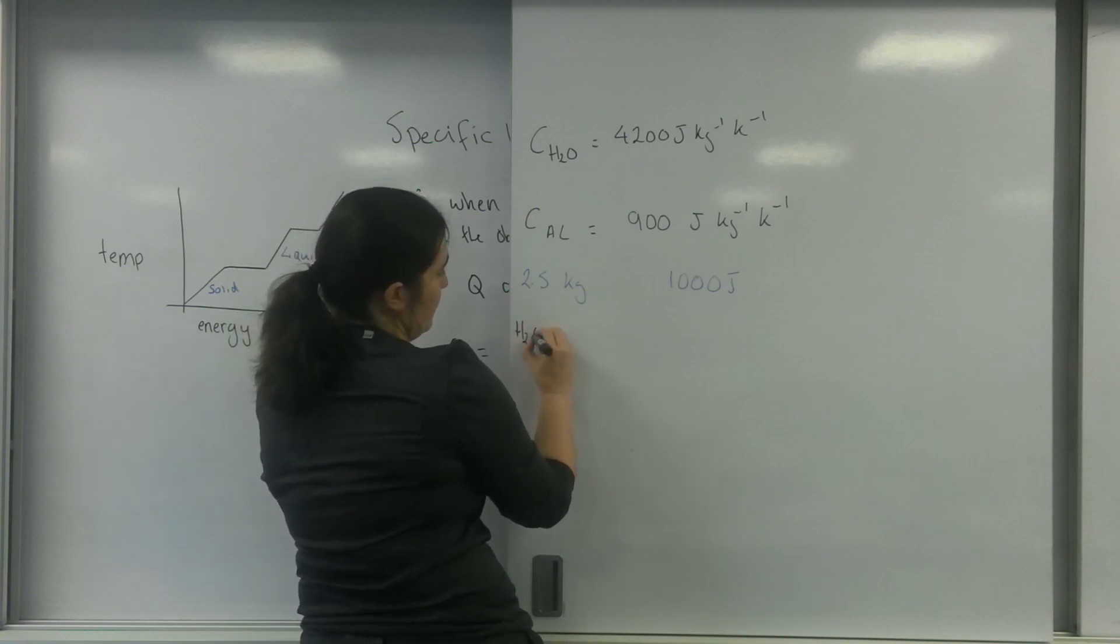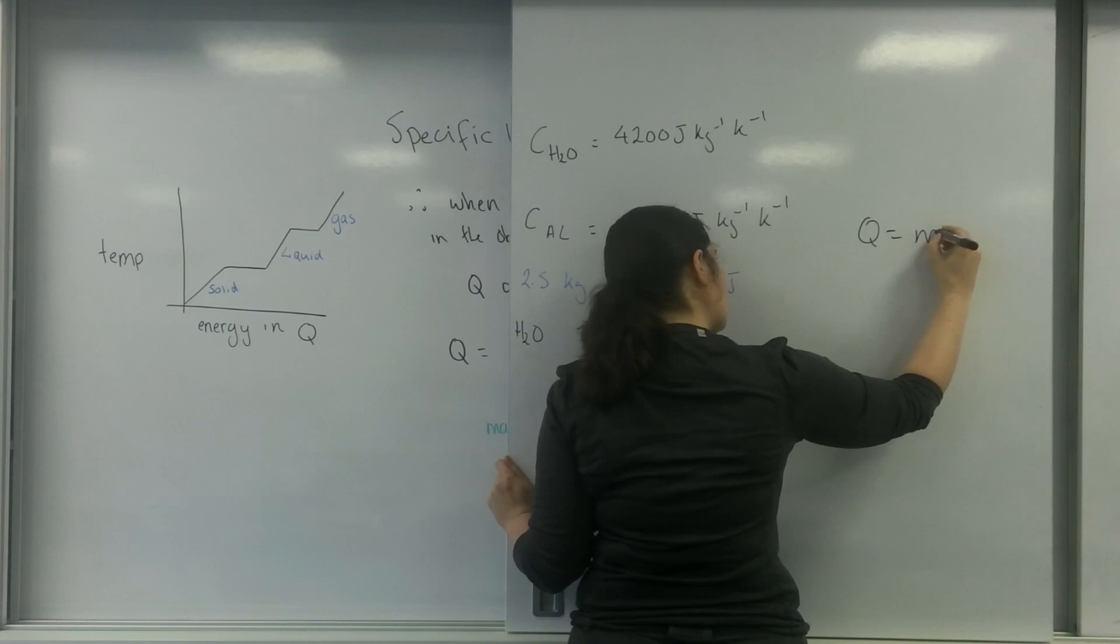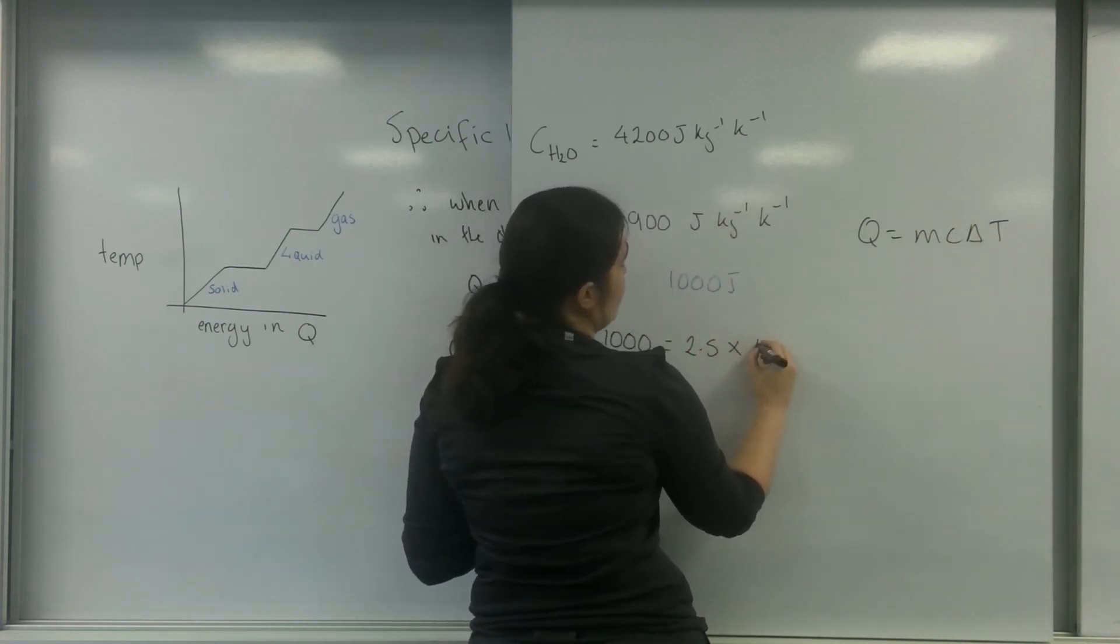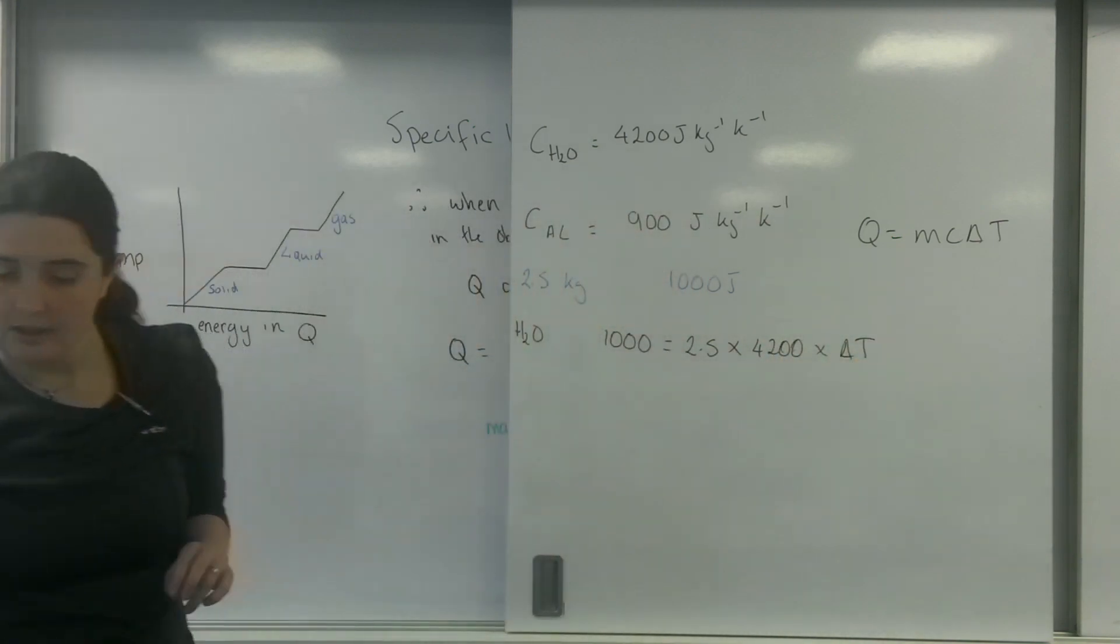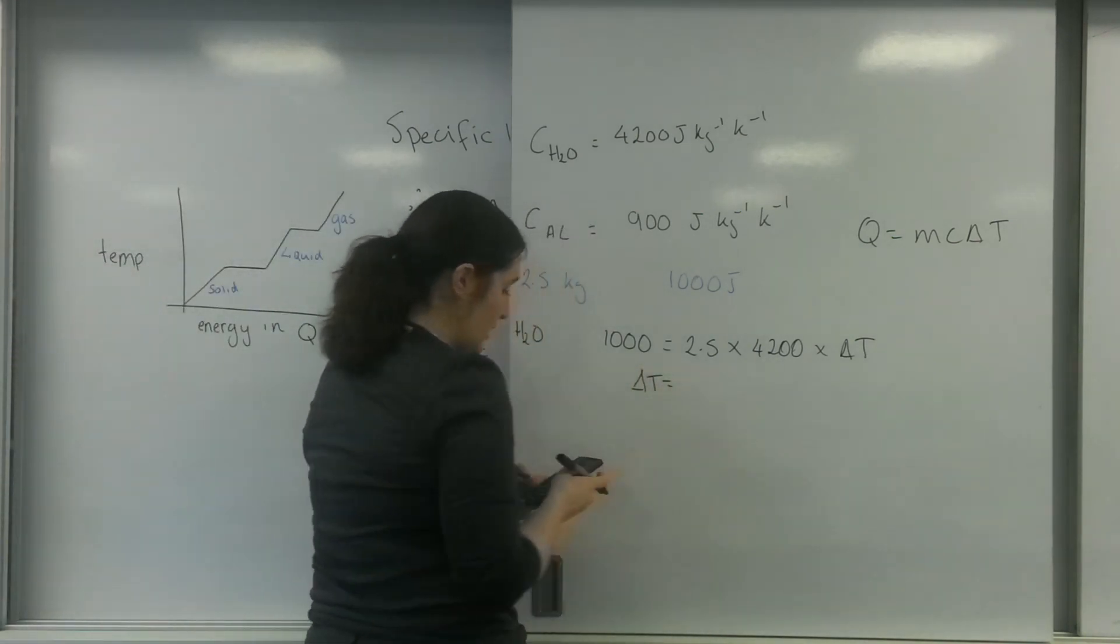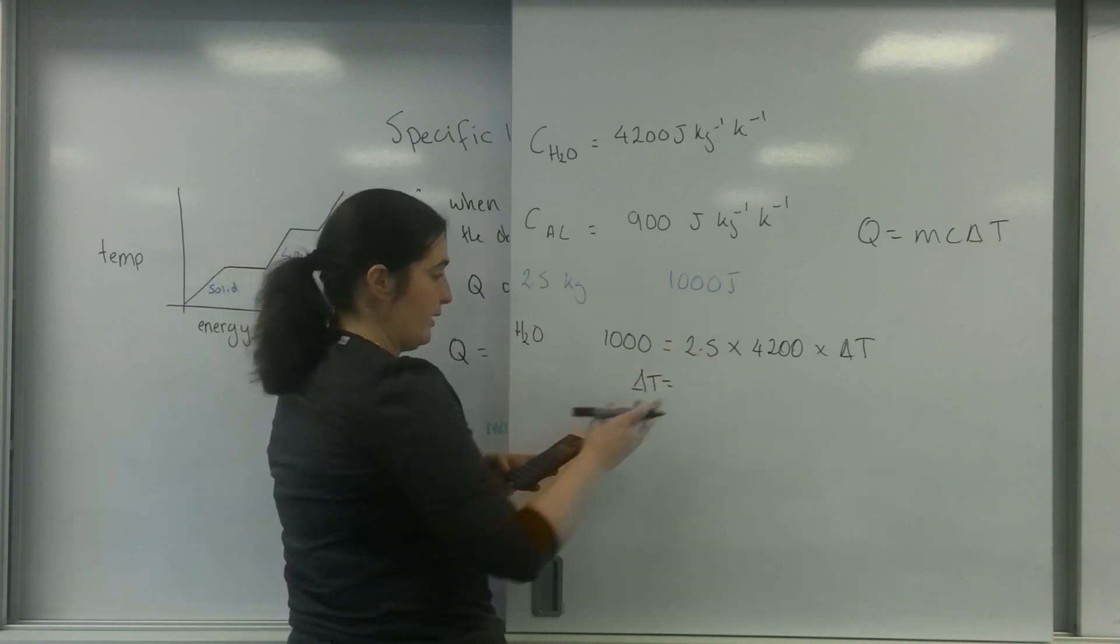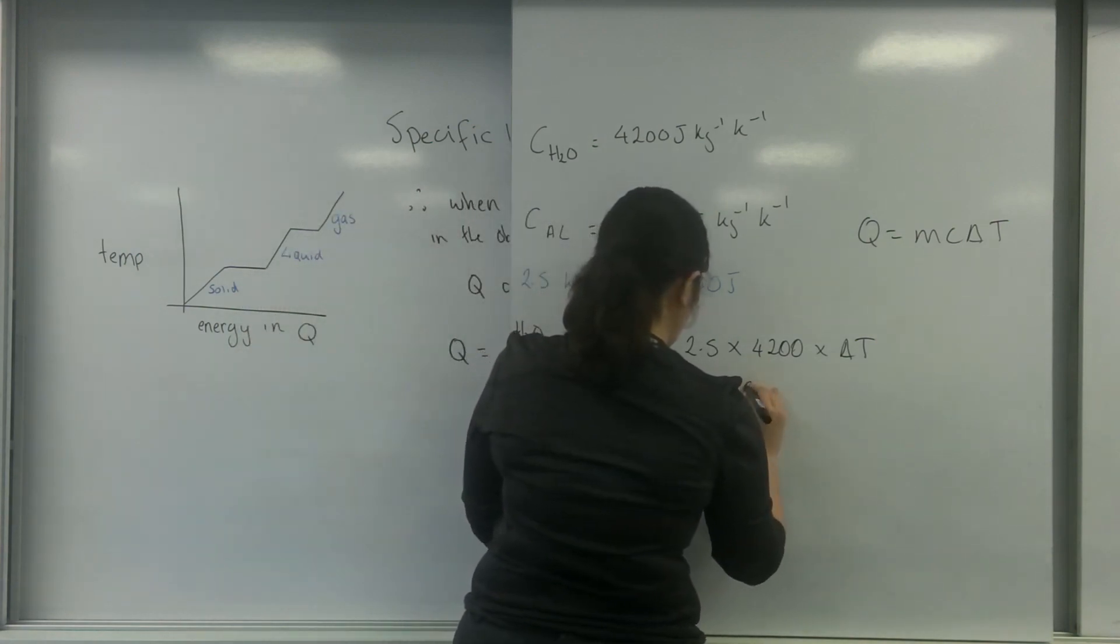For water, I've got a thousand, I've got the formula up here for you. I've got 1000 equals 2.5 times by 4,200 times by my change in temperature. So my change in temperature is 1,000 divided by 2.5 divided by 4,200, and I get an answer of 0.095 degrees C or Kelvin.